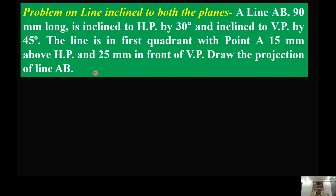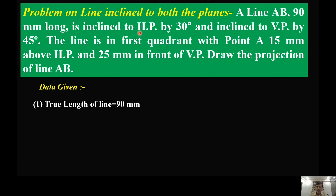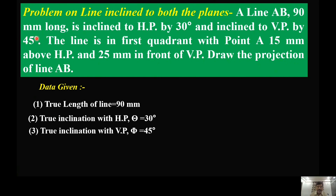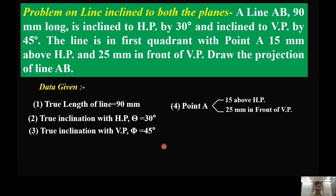The true length of the line is 90 mm. The true inclination of the line with HP is 30 degrees and with VP is 45 degrees. True inclination with HP is denoted by theta — that is 30 degrees. True inclination with VP is denoted by phi — that is 45 degrees. The line is in the first quadrant, with point A 15 mm above HP and 25 mm in front of VP.